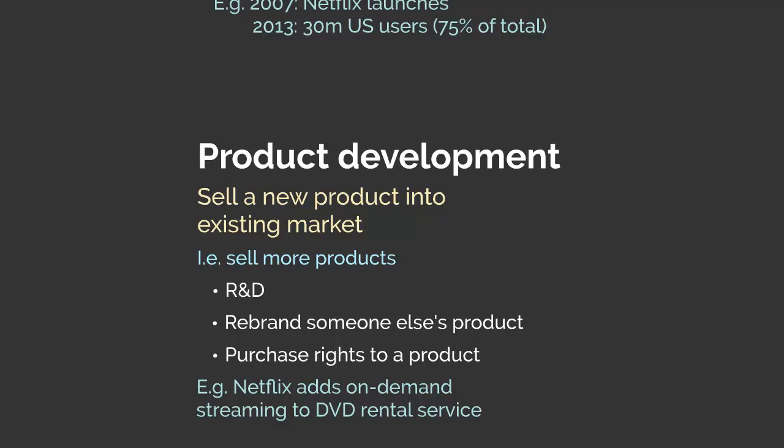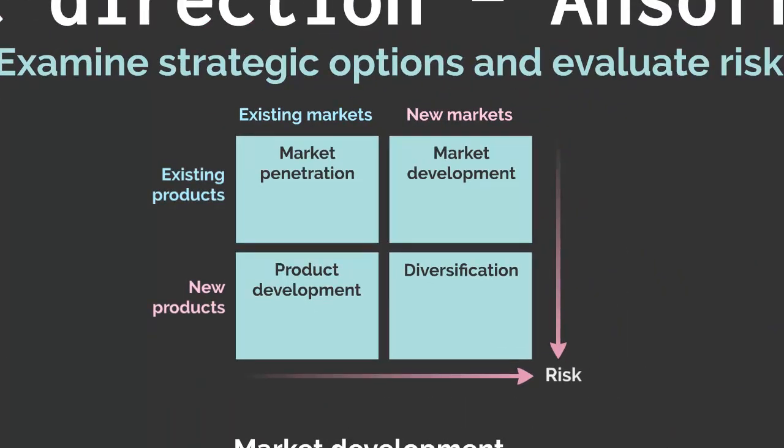Netflix continued developing their product by moving into commissioning exclusive video content, such as the famous series House of Cards. This was a high-cost, risky strategy competing against established TV stations, but House of Cards' success meant new customers signed up for the service, attracted by the exclusivity of key content — another masterclass in product development from Netflix.